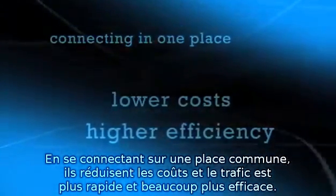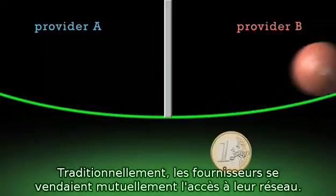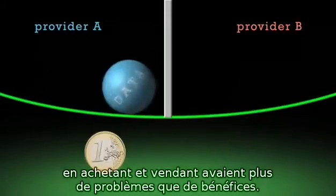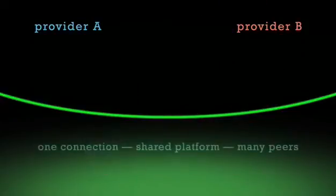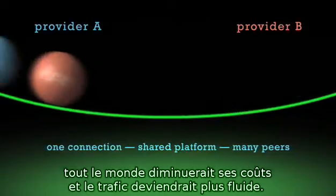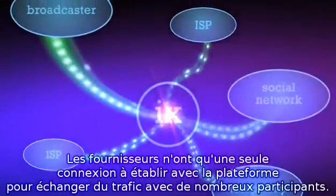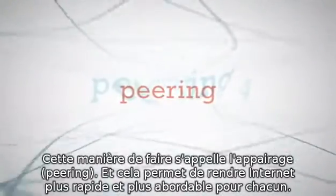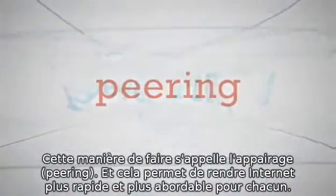By connecting in a common place, they save costs and the traffic between them flows faster and much more efficiently. Traditionally, providers have sold each other passage on their networks, but for some providers who regularly exchange traffic, all that buying and selling gets to be more trouble than it's worth. Many of them saw that if they just agree to meet each other halfway, everybody's costs go down and the traffic moves more smoothly. Providers are able to make a single connection to the platform to exchange traffic with many participants.